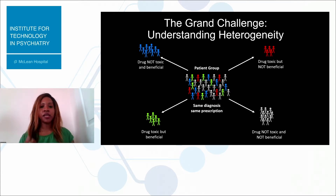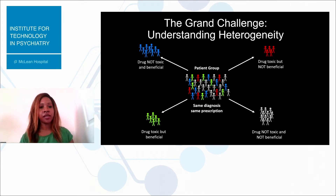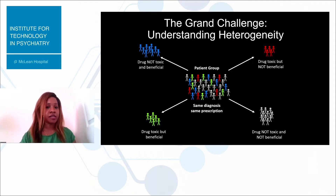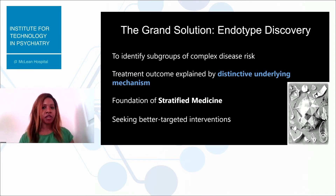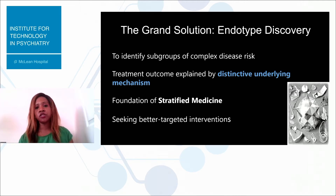In this example, we see a patient group which has the same diagnosis and the same prescription — this could be something like lung cancer. They are given a similar drug and have a similar manifestation of symptoms, but what we see is heterogeneity in how symptoms manifest over time and how people respond to treatments. For some people the drug may be toxic and not beneficial; for some the drug works but there are bad side effects; and some people are fine on such interventions. The grand challenge is endotype discovery — understanding the distinctive underlying mechanism responsible for that heterogeneity, how we can understand subgroups of complex diseases. This is the foundation for stratified medicine, and the aim is to seek better, more targeted interventions so that we get the right treatment to the right patients at the right time.